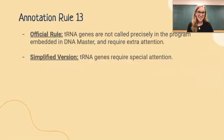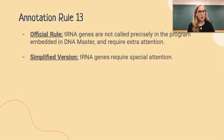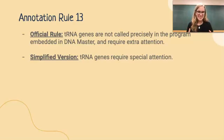The 13th rule of annotation says that tRNA genes require special attention. This rule reminds us that in certain annotation and bioinformatic programs — such as DNA Master, mentioned in the official rule — tRNA genes are not called precisely. We need to be extra careful not to just trust exactly what the computer tells us. We need to observe all of the data, look at all of our options, and make the most educated decision possible in our annotation.